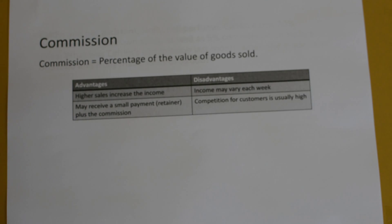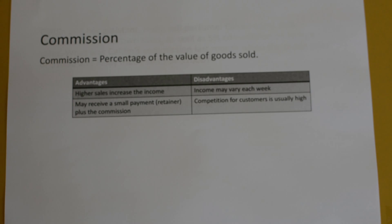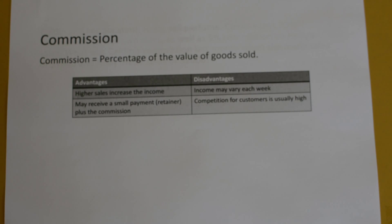An advantage of commission is that higher sales give you a bigger income. So if you earn a 1% commission on a house which sells for a million dollars, you'd earn 1% of the million dollars, which would be a lot larger than earning 1% on a car that sells for $2,000. So 1% of a million is going to be a lot larger than 1% of $2,000.